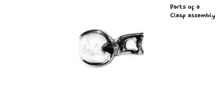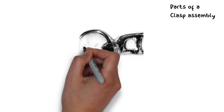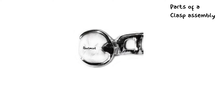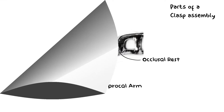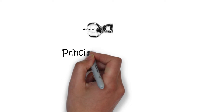The clasp assembly is the component that performs the function of direct retention for the removable partial denture. This clasp assembly consists of three key elements: the occlusal rests, the retentive arm, and the reciprocal or stabilizing arm. There are many different types of clasp assemblies, but the basic principles remain the same. The first basic principle of clasp design is known as the principle of encirclement.